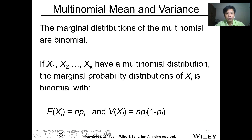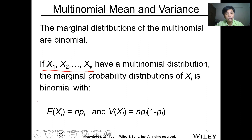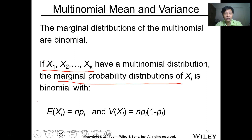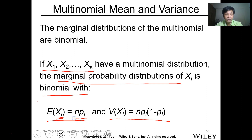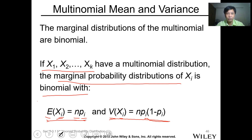For multinomial mean and variance: the marginal distributions of the multinomials are binomial. If x1 through xk have a multinomial distribution, the marginal probability distribution of xi is binomial with parameters n and pi. The mean of xi is equal to n times pi, and the variance of xi is equal to n times pi times (1 minus pi). So the expected value for the i-th variable is just n times pi, and the variance is pi times its complement.